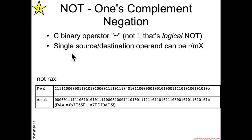NOT takes a single source and destination operand. Whatever you give as the source is going to be the destination it's going to in place flip all the bits. The operand is specified in an RMX form.